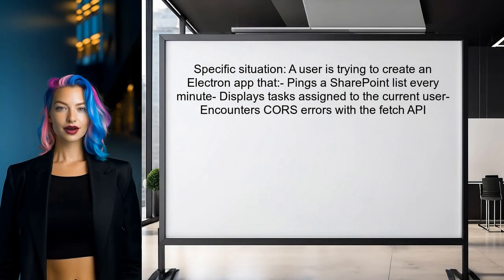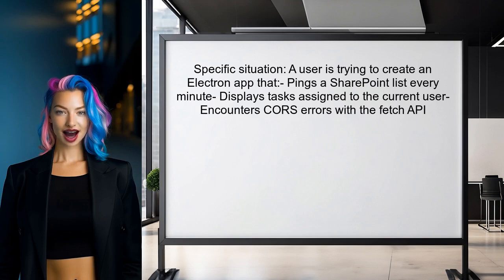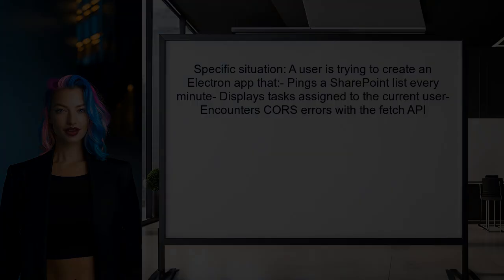Here's the specific situation we're looking at. One user is trying to create an Electron app that pings a SharePoint list every minute to display tasks assigned to the current user. They are using the Fetch API but are encountering CORS errors. Sound familiar? Let's dive into this together.